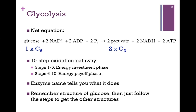The steps of glycolysis include ten steps, and they evenly divide themselves into five and five. The first five steps are referred to as the energy investment phase — we have to invest a little energy to get things going. The last five steps are the energy payoff phase, where we recoup our original investment and then some.